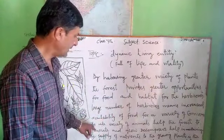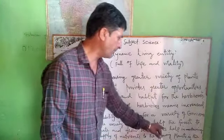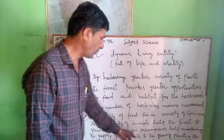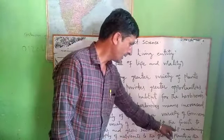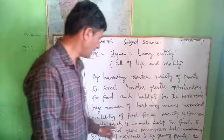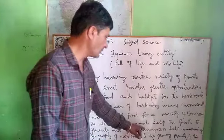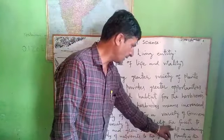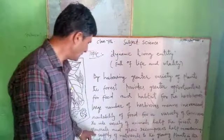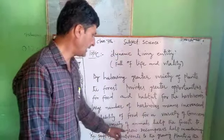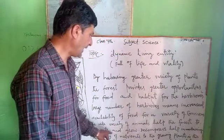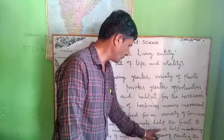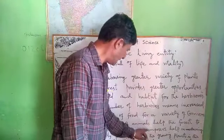The wide variety of animals helps the forests to generate and grow. Decomposers in the jungle are used to help the forests to generate and grow.